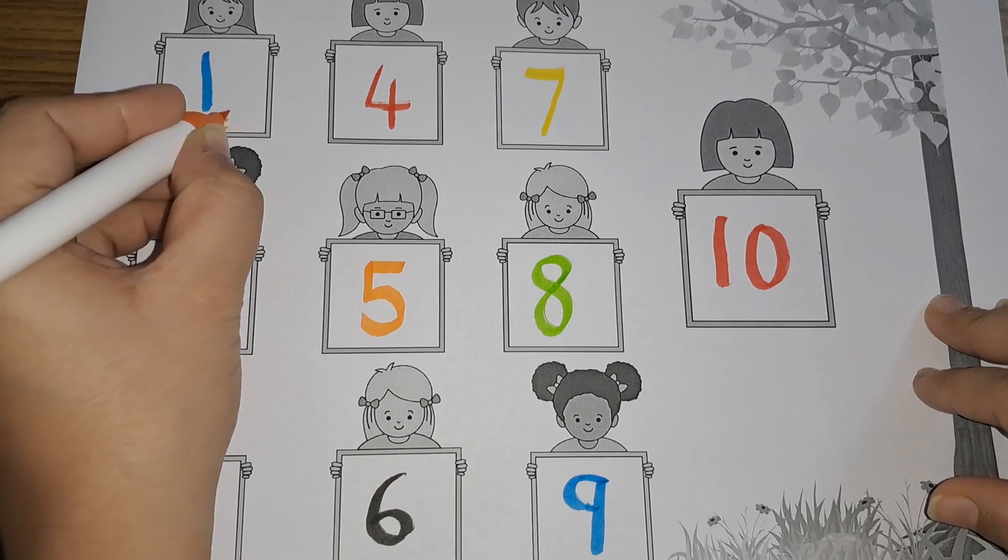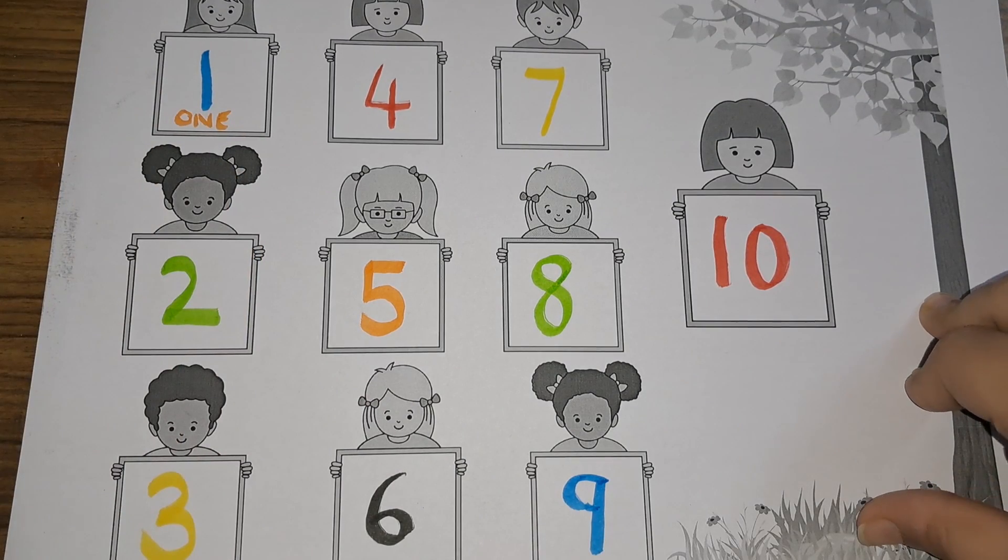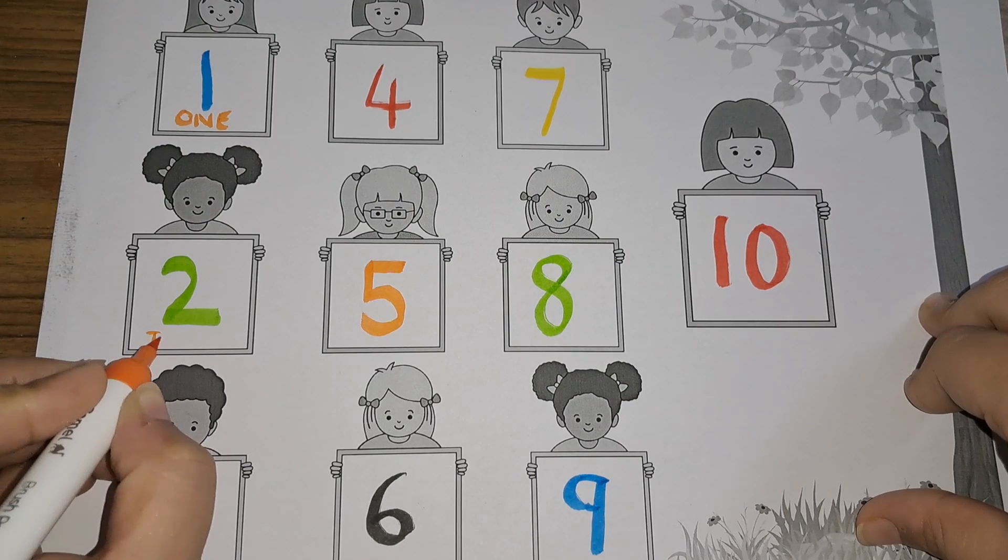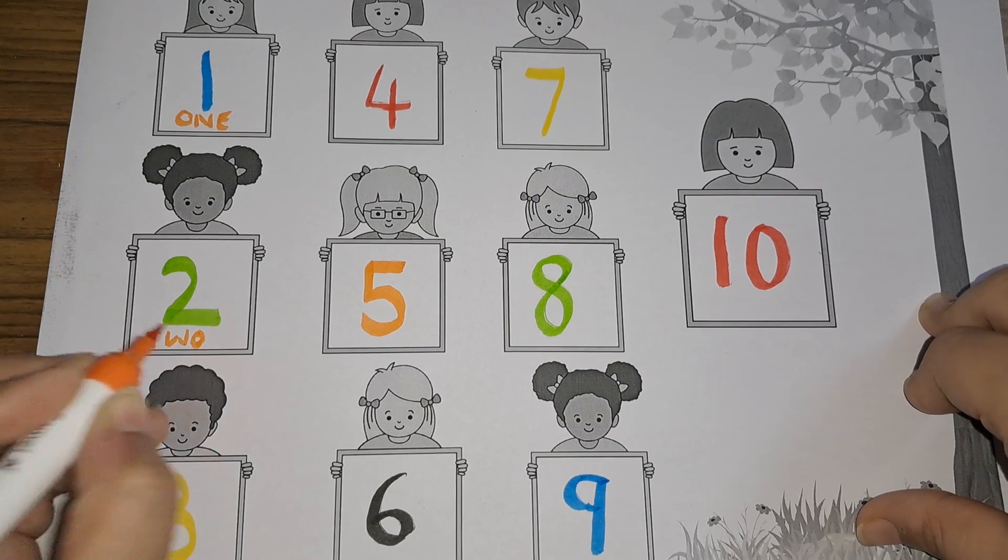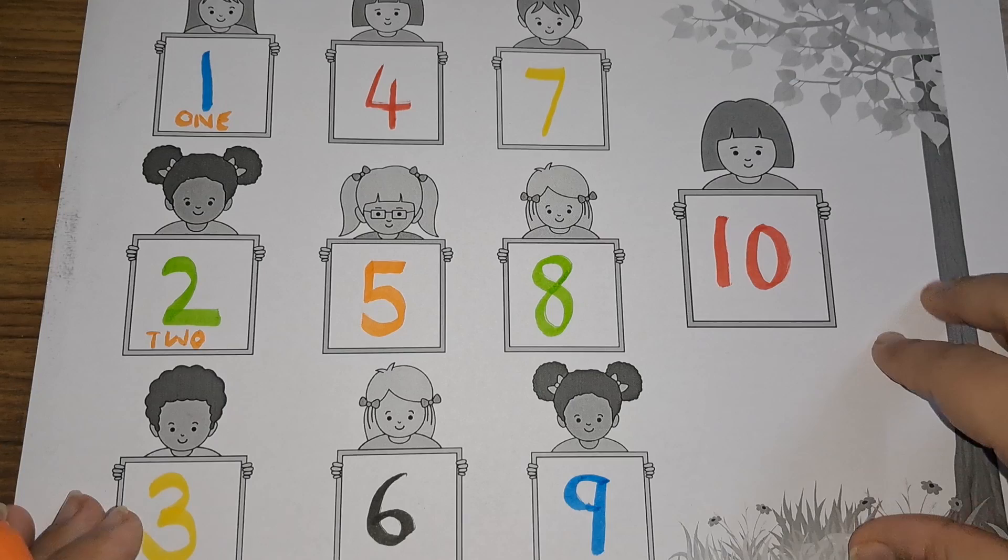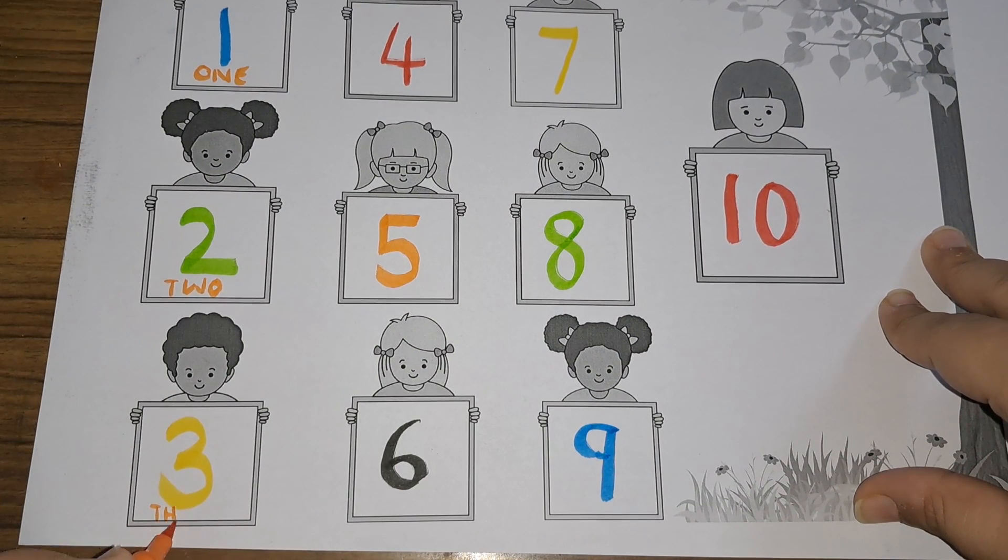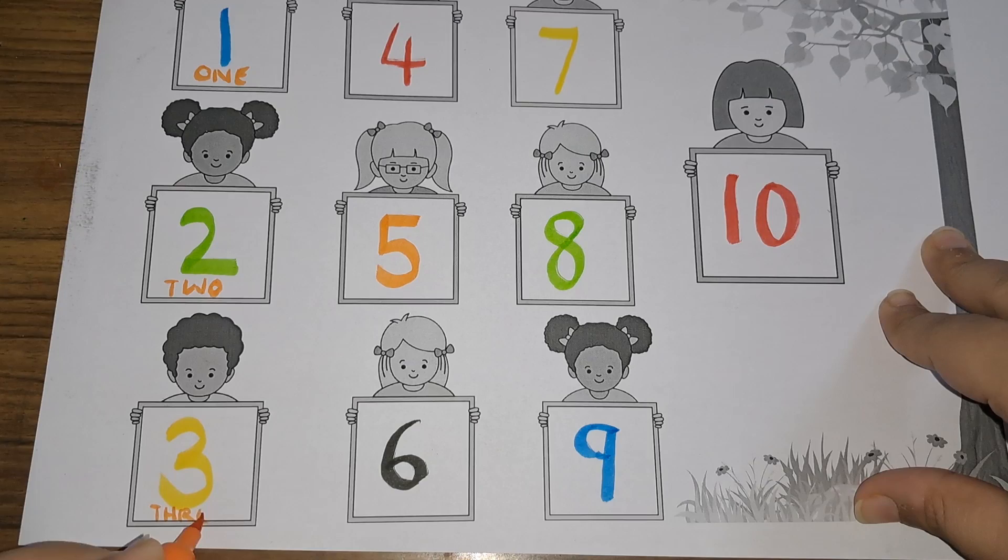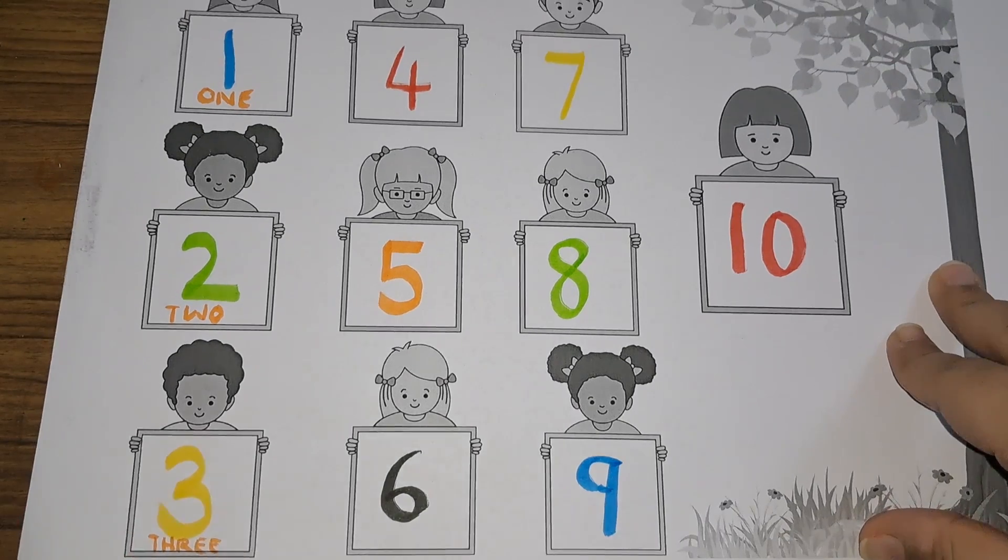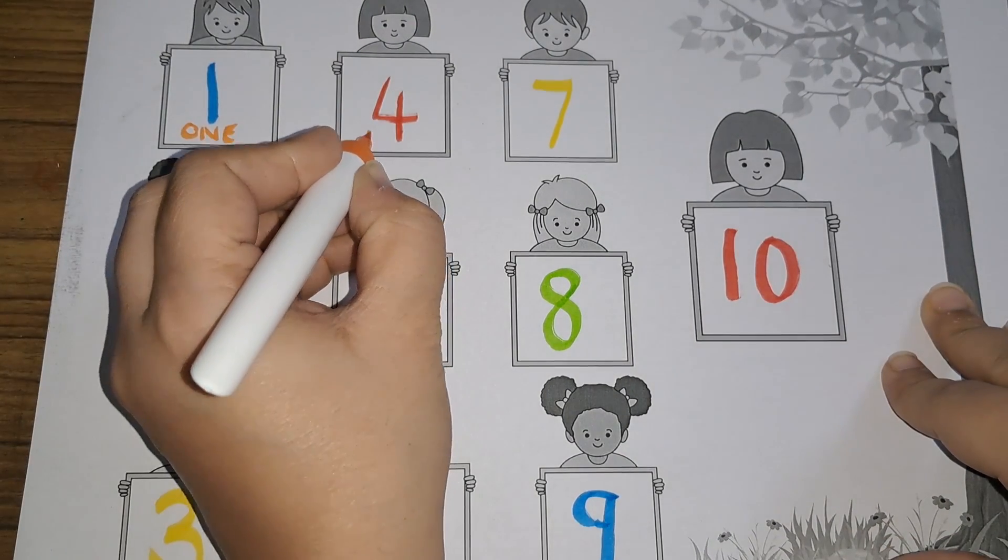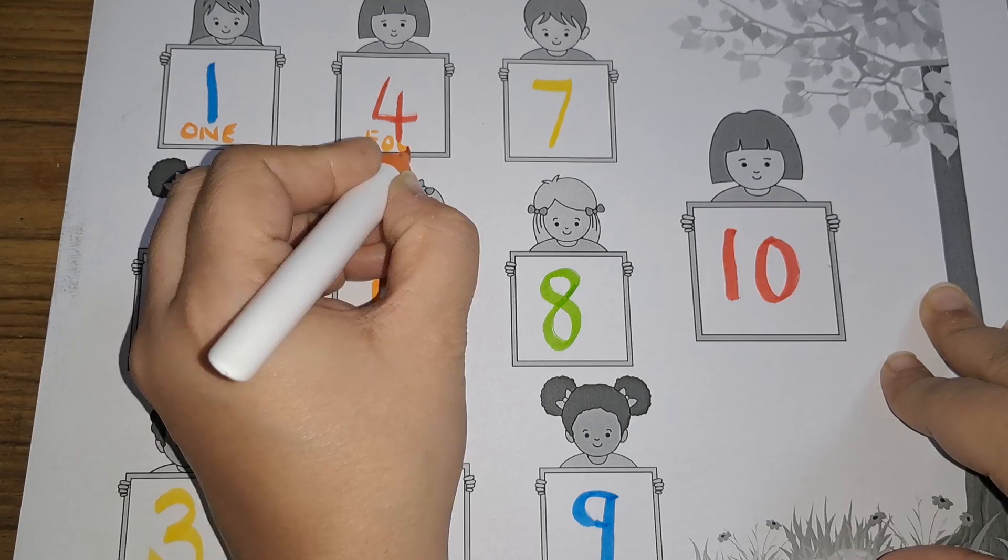One, number one, O-N-E, one. Two, T-W-O, two. Three, T-H-R-E-E, three. Four, F-O-U-R, four.